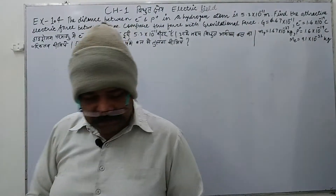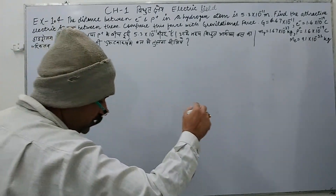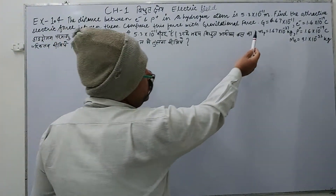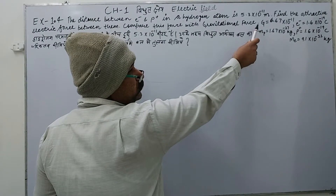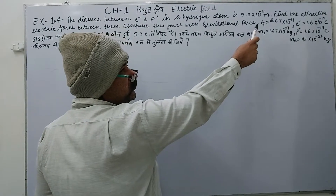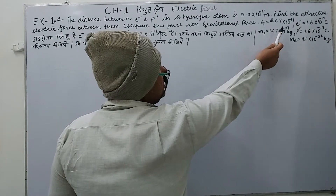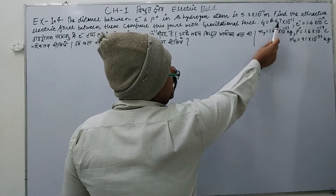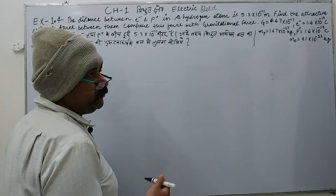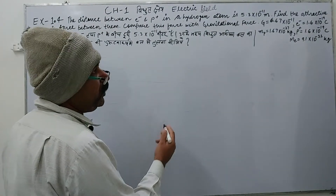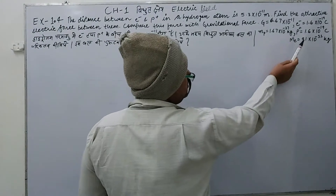All the values are given. The gravitational constant G is 6.674 × 10⁻¹¹ in its standard units. The charge on the electron and the charge on the proton are also given values we need to use for this numerical.